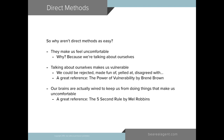Our brains are actually wired to keep us from doing things that make us uncomfortable and keep us from being vulnerable. A wonderful book that really touches on this is by Mel Robbins — it's called The Five Second Rule. She was one of the first people that really started researching this concept of why can't I just do the things I know I need to be doing? In real estate, we know we should be calling our people, talking to people about our business. The Five Second Rule helps us understand that it's because our brains train us not to — it makes us uncomfortable, and our brains don't want us to do things that are uncomfortable. Therefore, we don't.